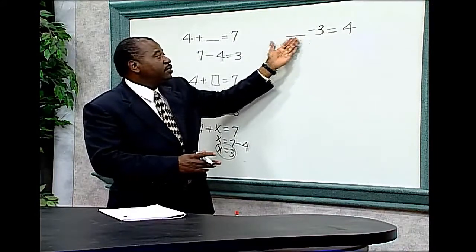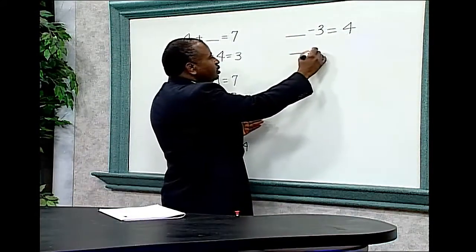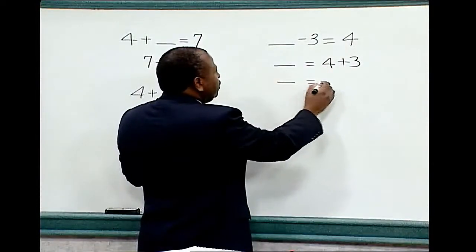One way to arrive at the solution is to add blank equals 4 plus 3. So blank would equal 7.